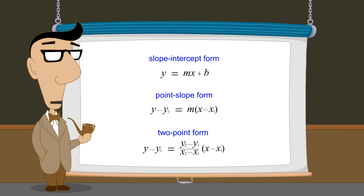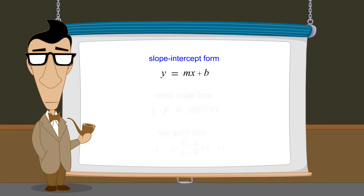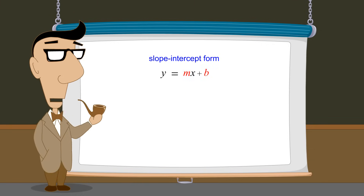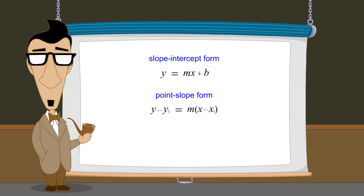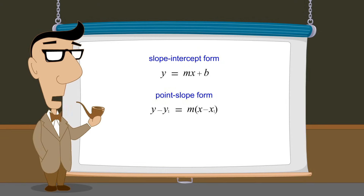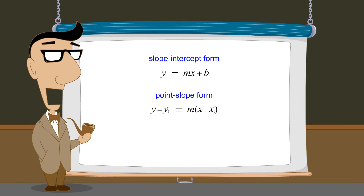The most convenient form to use depends upon what information is known about the line. The slope-intercept form contains the constants m and b, which specify the line's slope and y-intercept. The point-slope form also uses m to specify slope, but instead of the line's elevation being determined by the y-intercept, the elevation is determined by constants x1 and y1, the coordinates of any point which lies on the line.